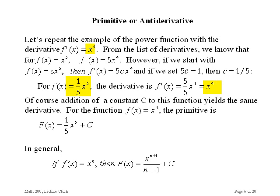The general rule is: the antiderivative of x to the n is x to the n plus 1 over n plus 1. When you take the derivative of x to the n plus 1, the exponent n plus 1 comes out in front but is cancelled by the n plus 1 in the denominator, leaving plain x to the n.